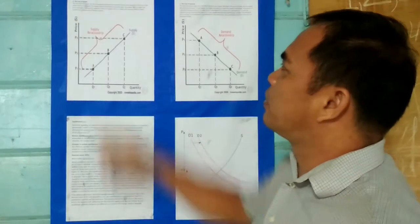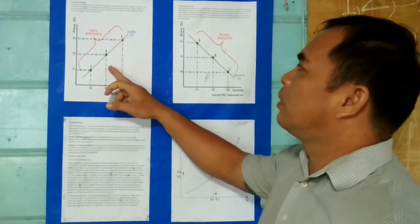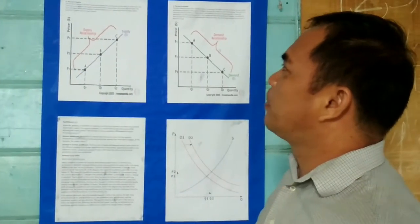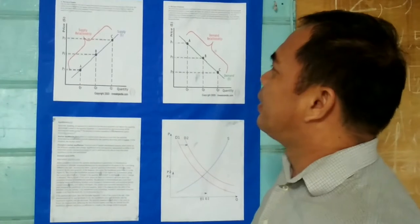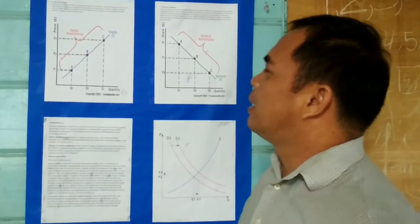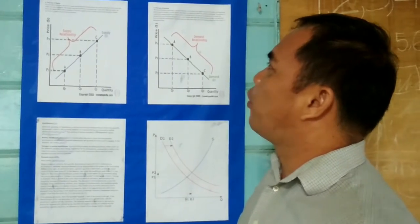The first is the law of supply. We have here the direct principle of law of supply. Like the law of demand, the law of supply demonstrates the quantities that will be sold at a certain price. But unlike the law of demand, the supply relationship shows an upward slope.